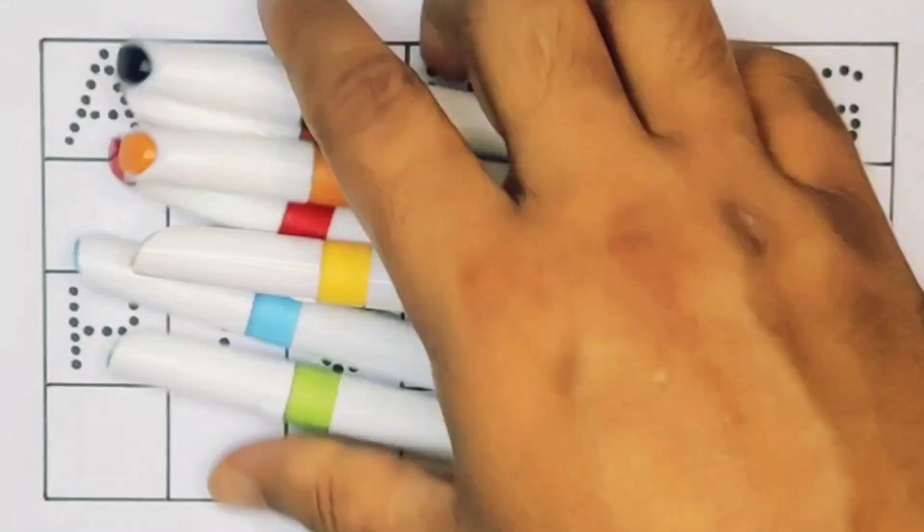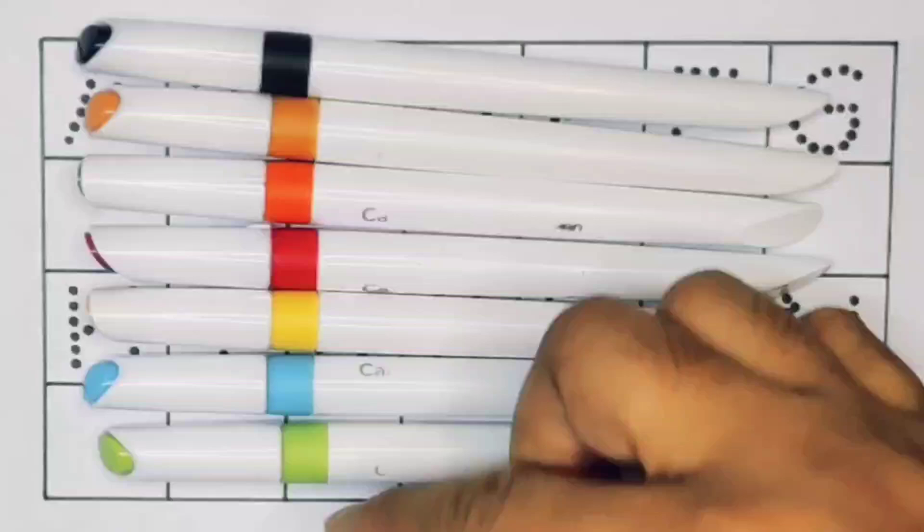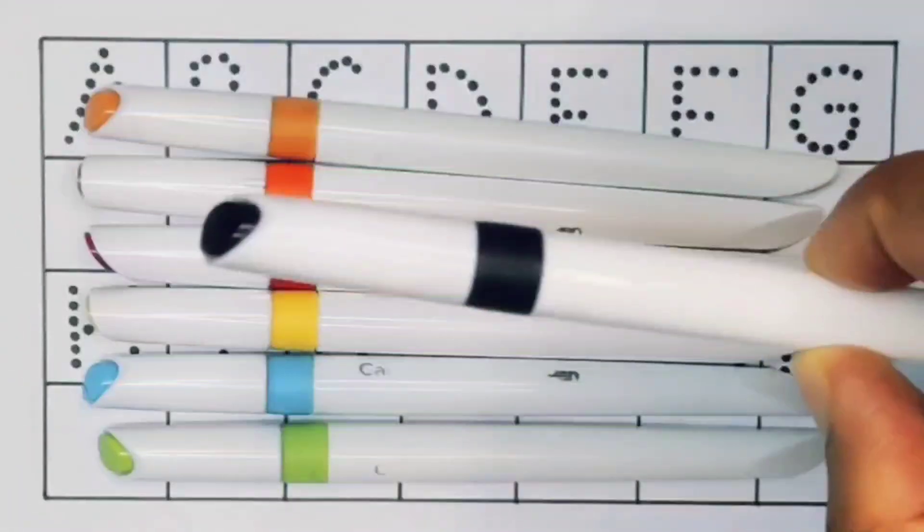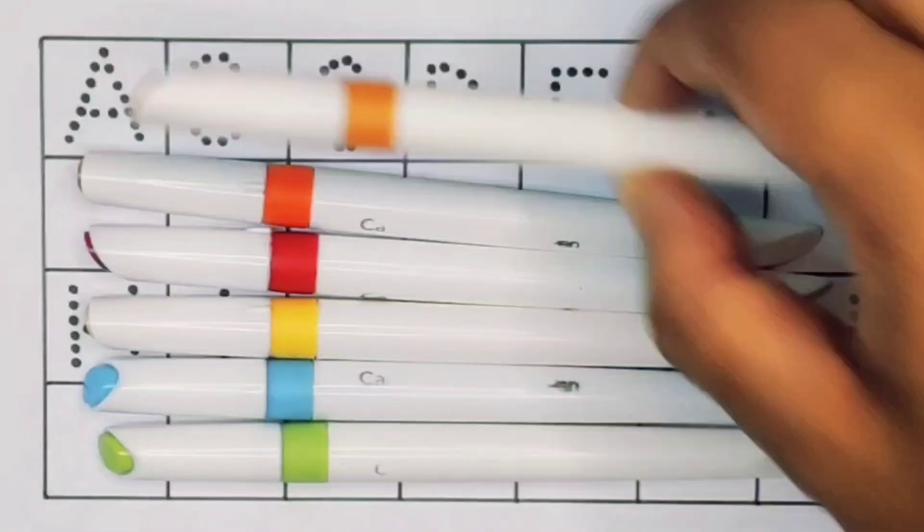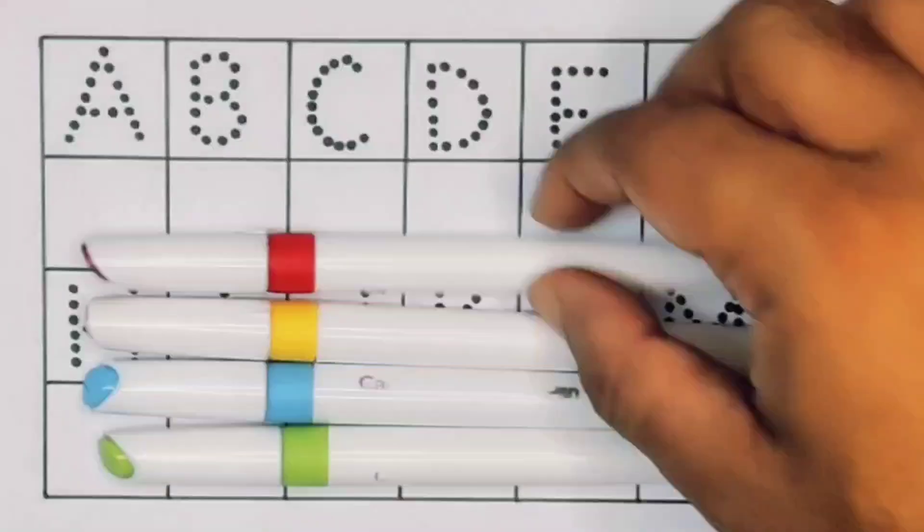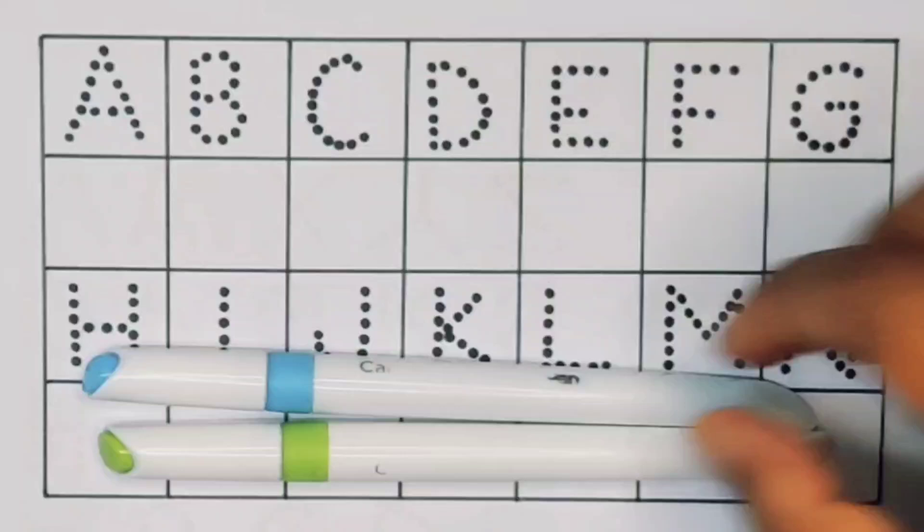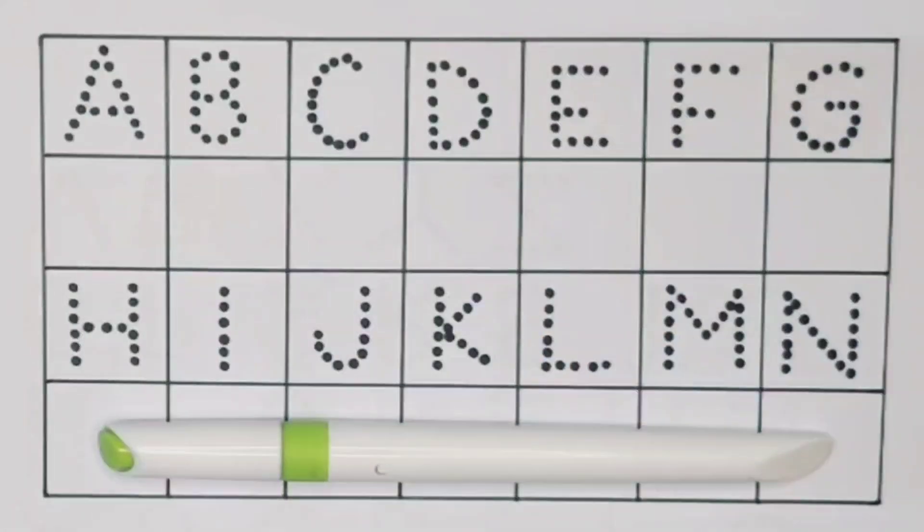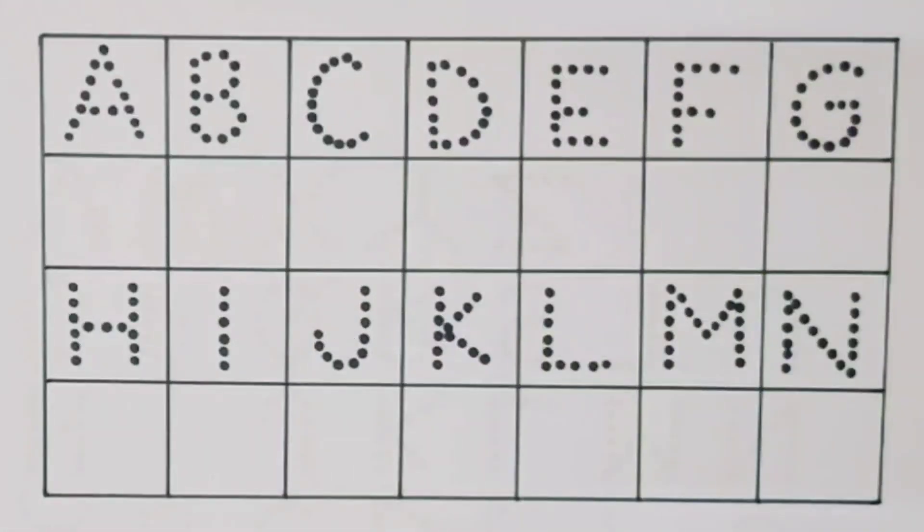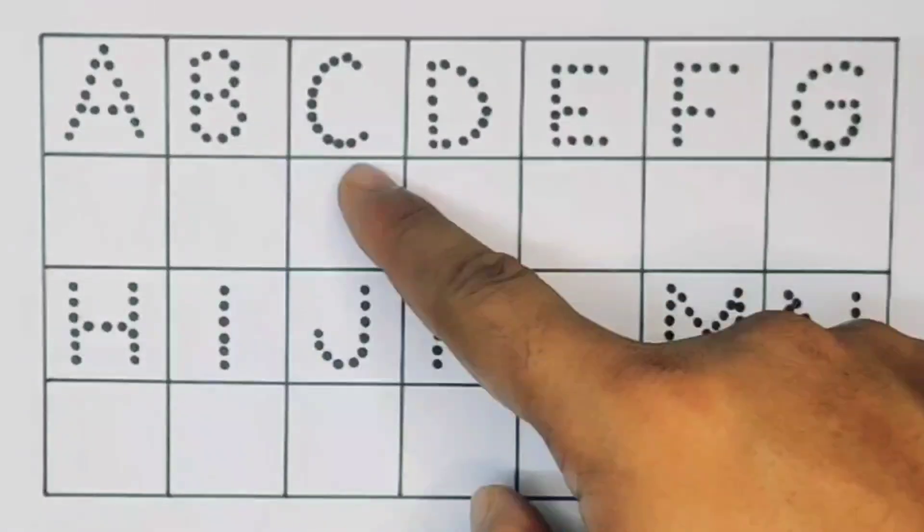Hello kids, welcome to my new video. First we're going to know the colors: black, brown, orange, red, yellow, light blue, light green. Now let's learn the alphabet A, B, C, D.